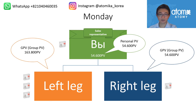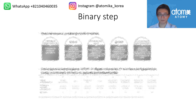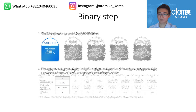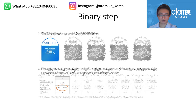One of the main sources of income is binary steps — there are three sources of income total, but we'll focus on binary steps in this video. To match a binary step, you first need to be at least a sales representative. There are seven types of binary steps. The smallest one requires 300,000 PV on your left side and 300,000 PV on your right side.